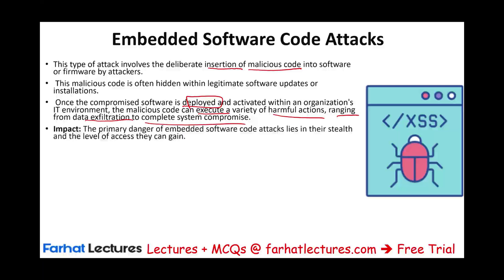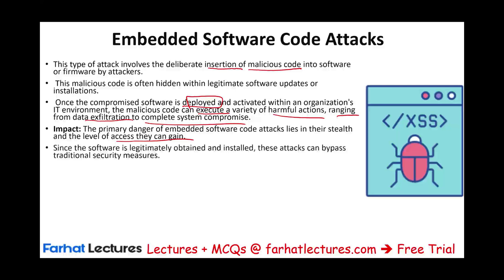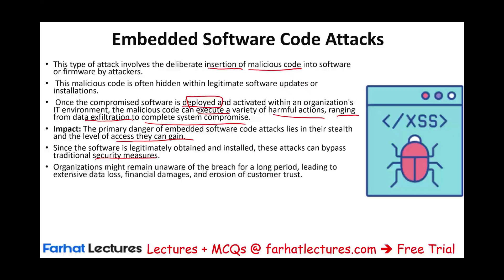Once compromised software is deployed, the malicious code is activated and can execute a variety of harmful actions ranging from data exfiltration to complete system compromise. The primary danger of embedded software lies in its stealth — the company is not aware of it, and because it's already installed in their system, it has access to many assets. Since the software is legitimately obtained and installed, these attacks bypass traditional security measures, and organizations may be unaware of the breach for a long time, leading to extensive data loss, financial damages, and erosion of customer trust.